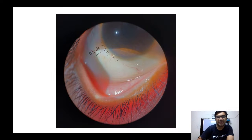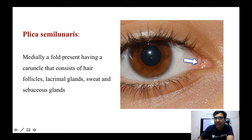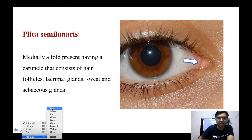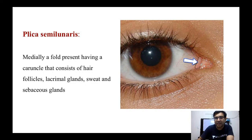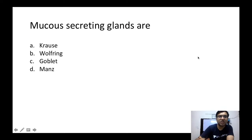At the palisades of Vogt we have the limbal stem cells. Moving to the next important portion — the plica semilunaris. This membrane is basically vestigial in human beings, but it consists of follicles, lacrimal glands, sweat glands, and sebaceous glands.